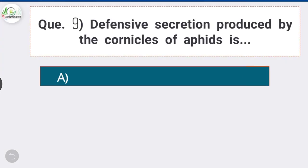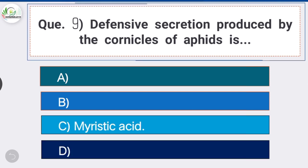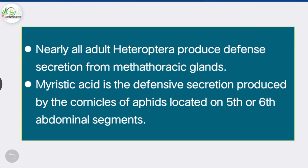Question 9: Defensive secretion produced by the cornicles of aphids is Option C, the correct answer: myristic acid. Myristic acid is a defensive secretion produced by cornicles of aphids, located on the fifth or sixth abdominal segments. When attacked by a predator, many aphids release a conical secretion. This secretion contains alarm pheromones that alert other members of the colony and may also threaten an attacker.